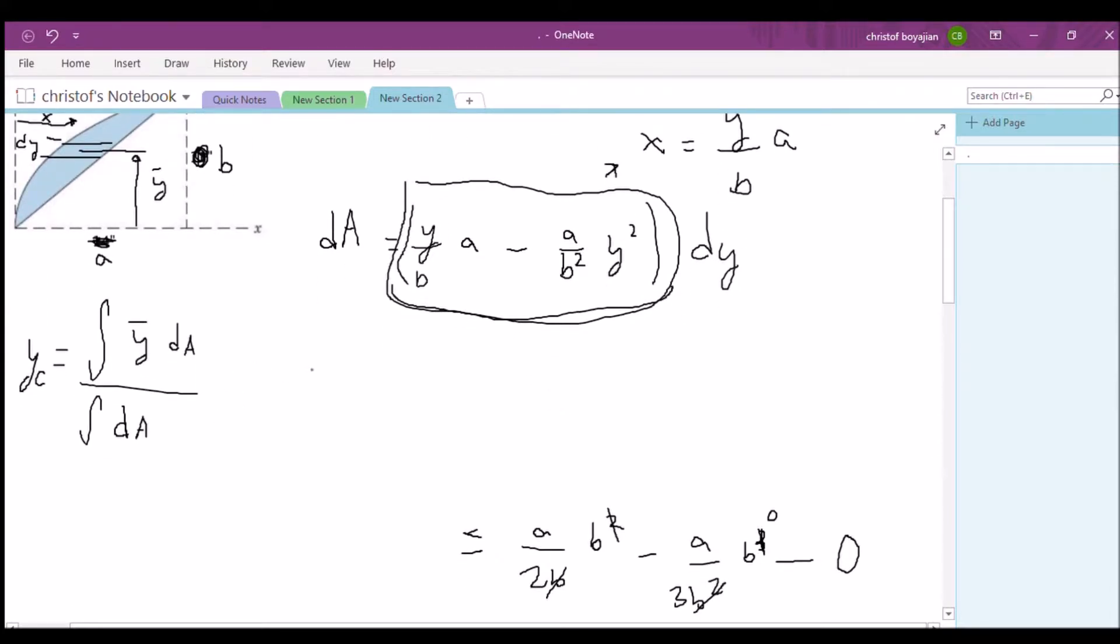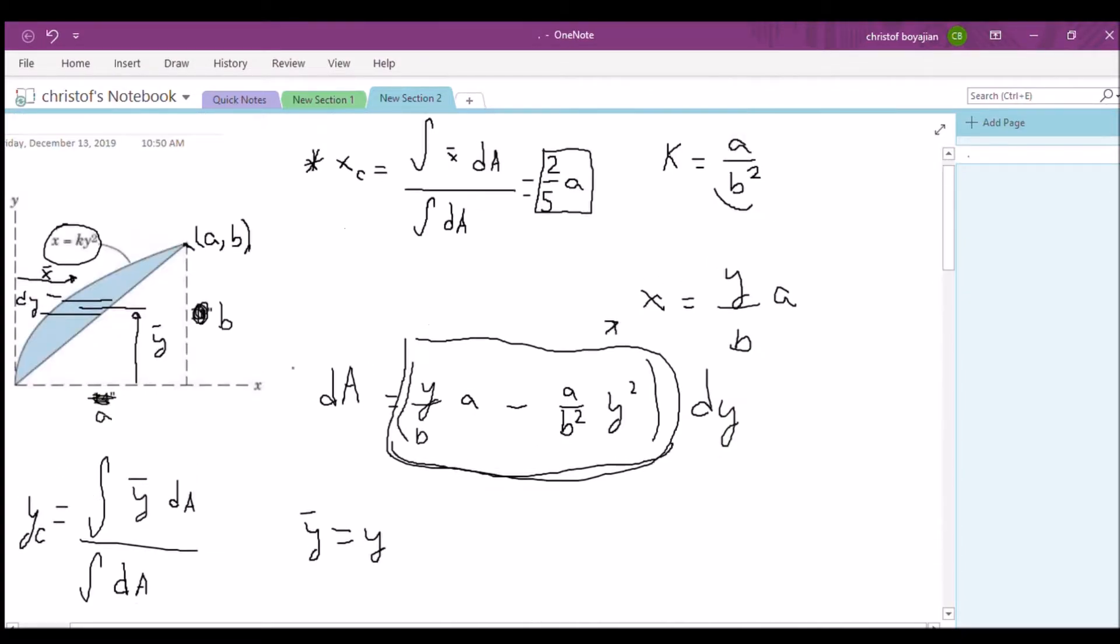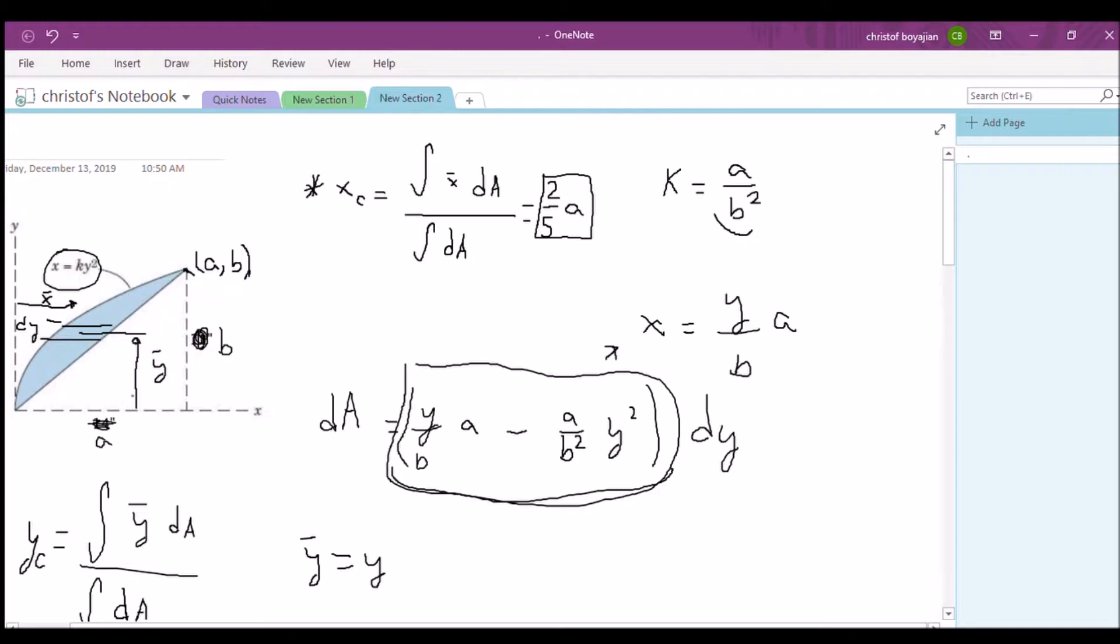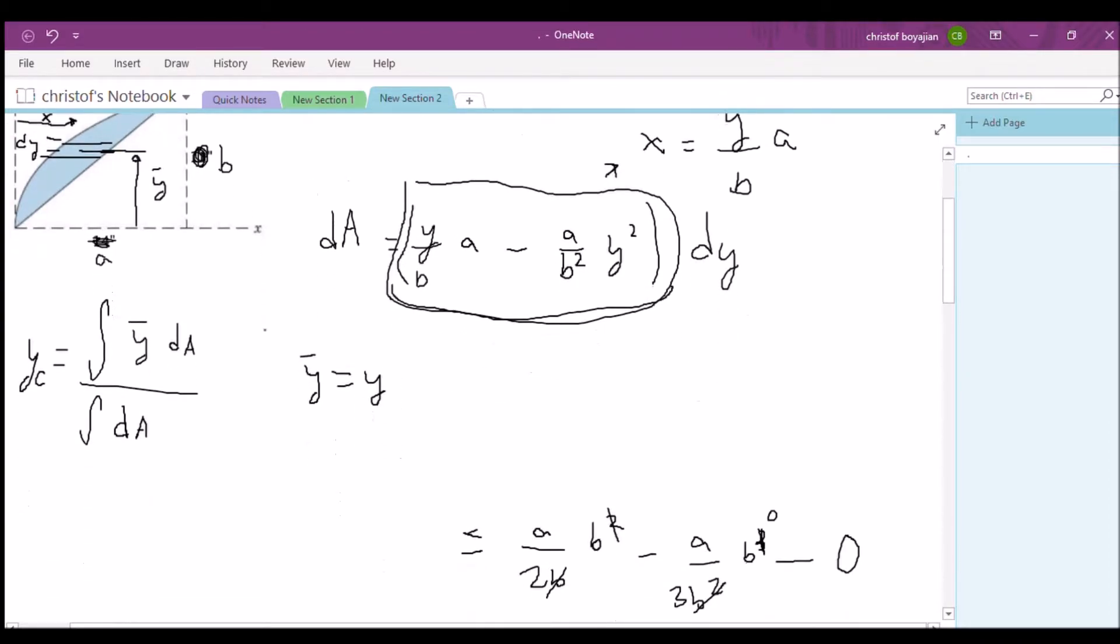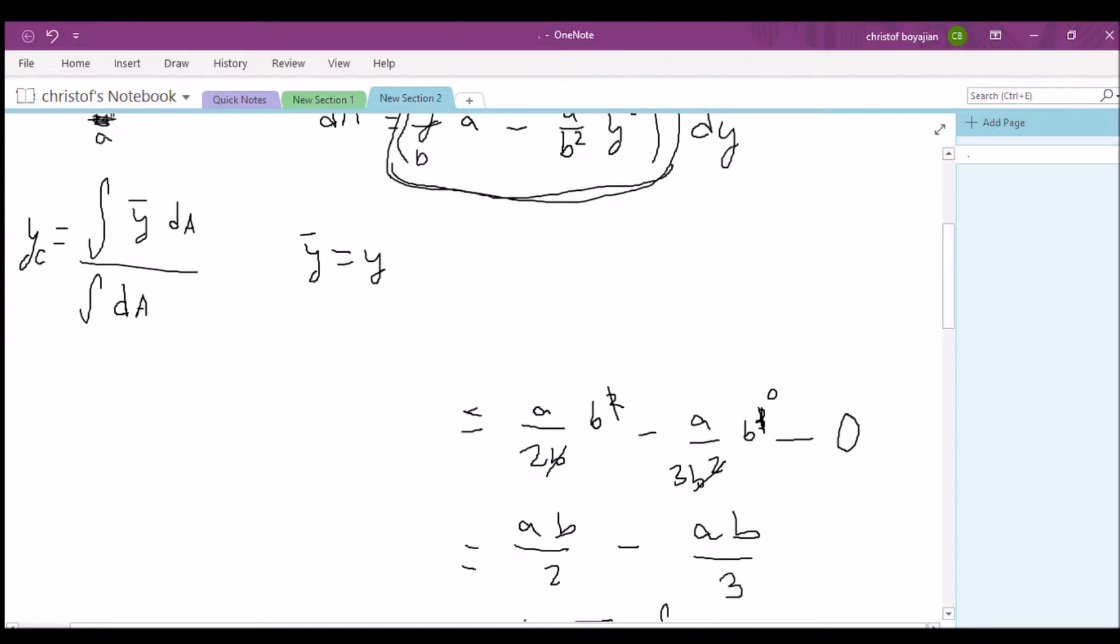So y bar is just simply y. Why? Because when you're going up to the y coordinate, it's actually going to be whatever y coordinate of your equations that you have over here of the centroid. Okay, that's great. So now let's go ahead and solve for our centroid.